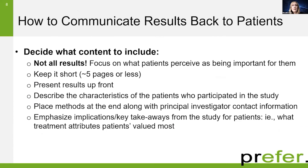One key consideration is how to develop and decide what content from the patient preference study to share back to patients. It's not all results. There's usually a very extensive amount of data that come out of patient preference studies. The idea is to understand from the patient's perspective what's really of most interest and importance to them, and to keep it focused so that this is front and center when the results are presented. Keeping it short — five pages or less — emphasizing the key results up front, and then describing the characteristics of the patients who participated in the study along with the methods at the end of the document.